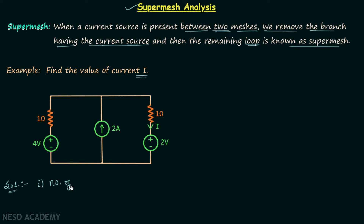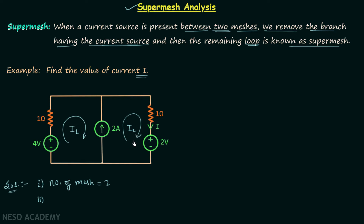So the number of meshes is equal to two. In step number two we assign the mesh currents. Let's say I1 is the current in mesh number one and I2 is the current in mesh number two. I1 is flowing in the clockwise direction and I2 is also flowing in the clockwise direction.